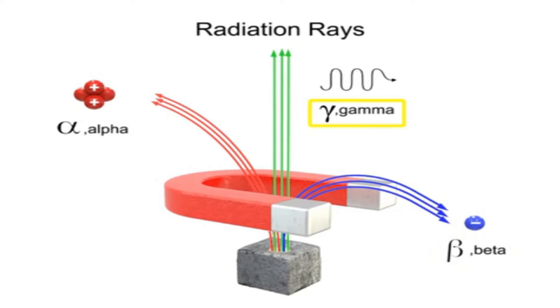Gamma rays are pure energy. Because a gamma ray has neither mass nor charge, it remains unaffected by the magnetic field.